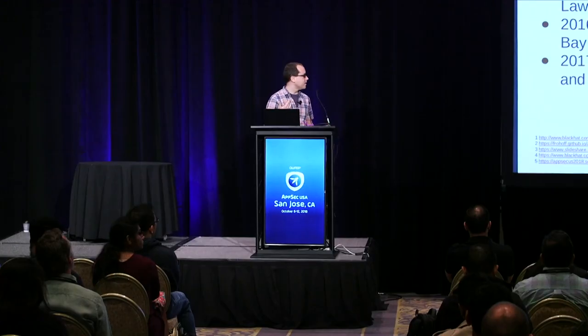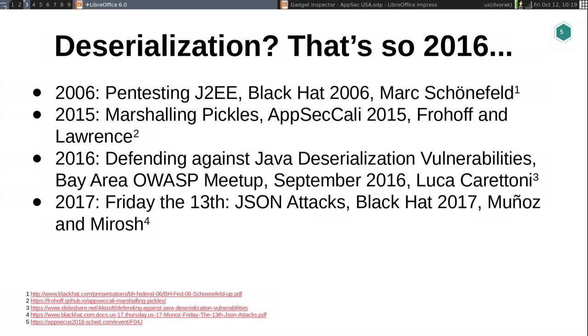In 2017, Munoz and Marosh gave a great talk at Black Hat about JSON attacks. Up until that point everyone was focused on the JDK's built-in serialization library and how to build gadget chains using that. What Munoz and Marosh did was a really good survey of all these other serialization libraries and in languages beyond just Java, identifying when those are possibly vulnerable and what kind of attacks you can do. So just because you're using JSON doesn't mean you're safe from these kinds of attacks. Fundamentally, if whatever serialization scheme you're using allows you to control what data types are getting deserialized, then you're potentially vulnerable.